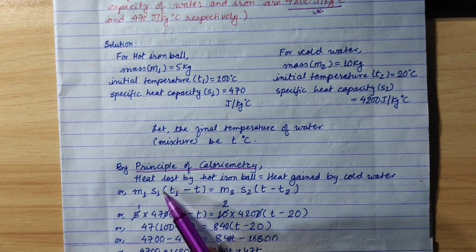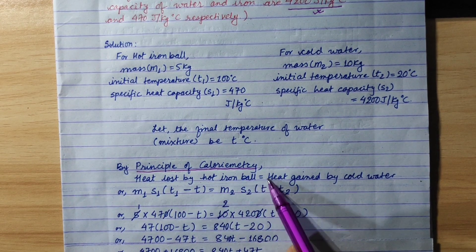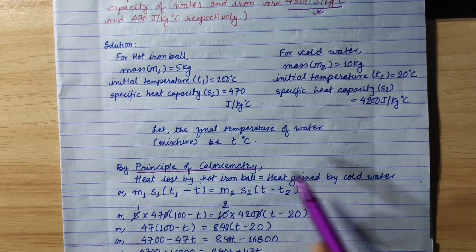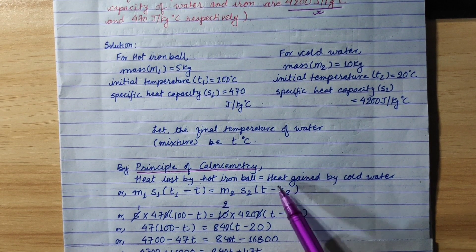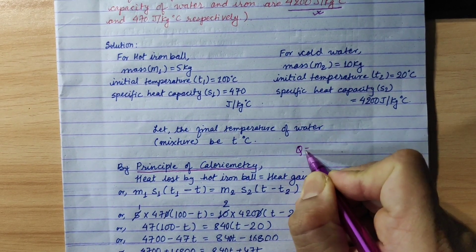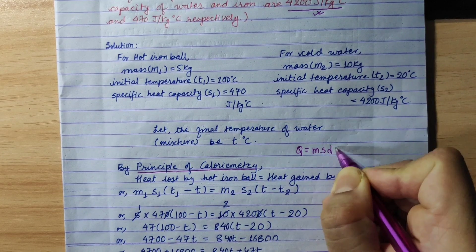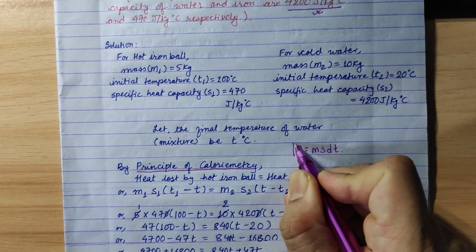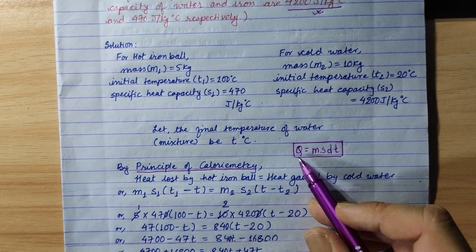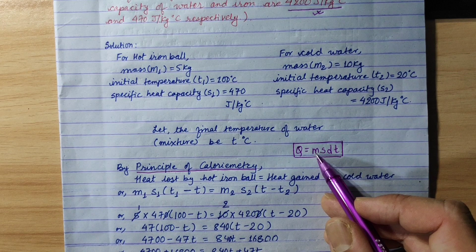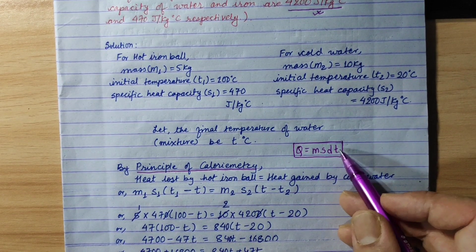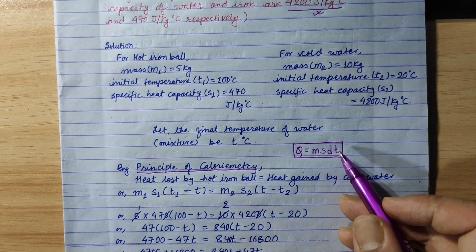The principle of calorimetry states: heat lost by hot iron ball equals heat gained by cold water. Here Q equals MSδT, where M equals mass of the substance, S equals specific heat capacity of the substance, and δT equals change in temperature.